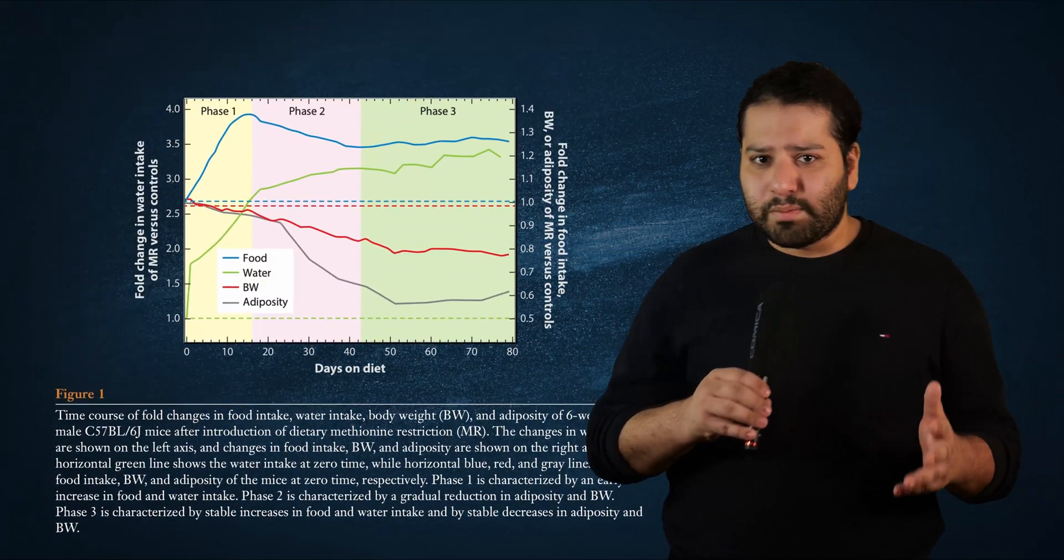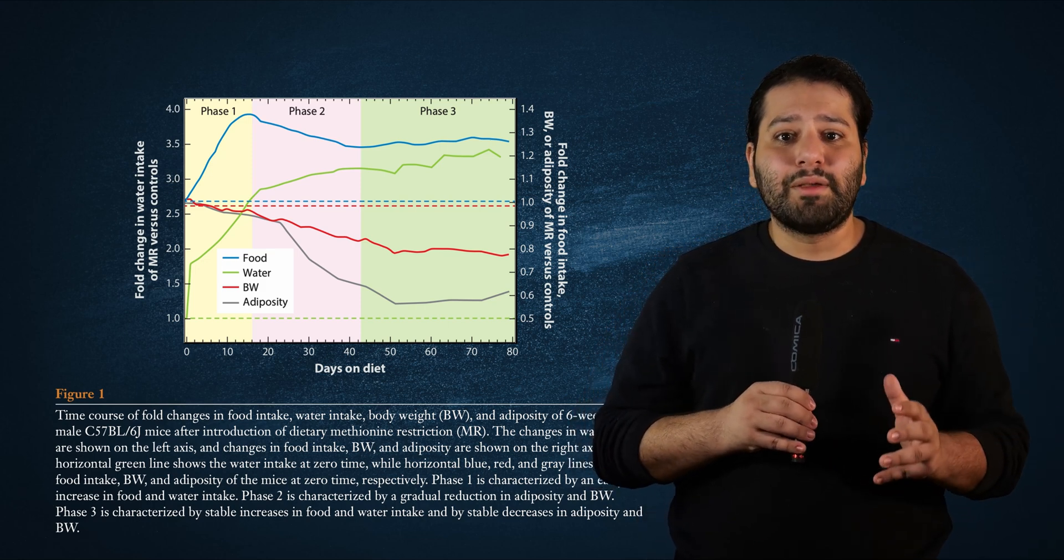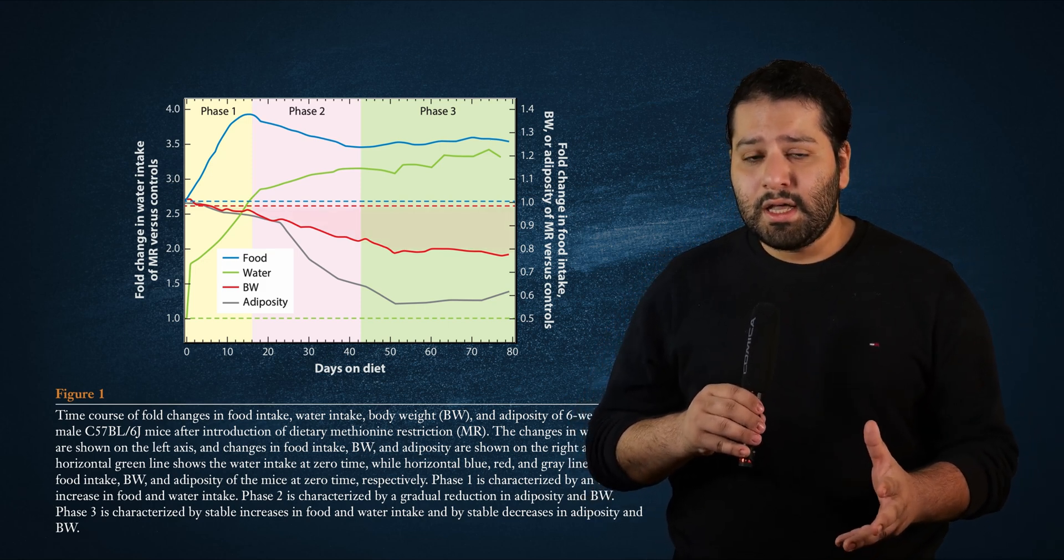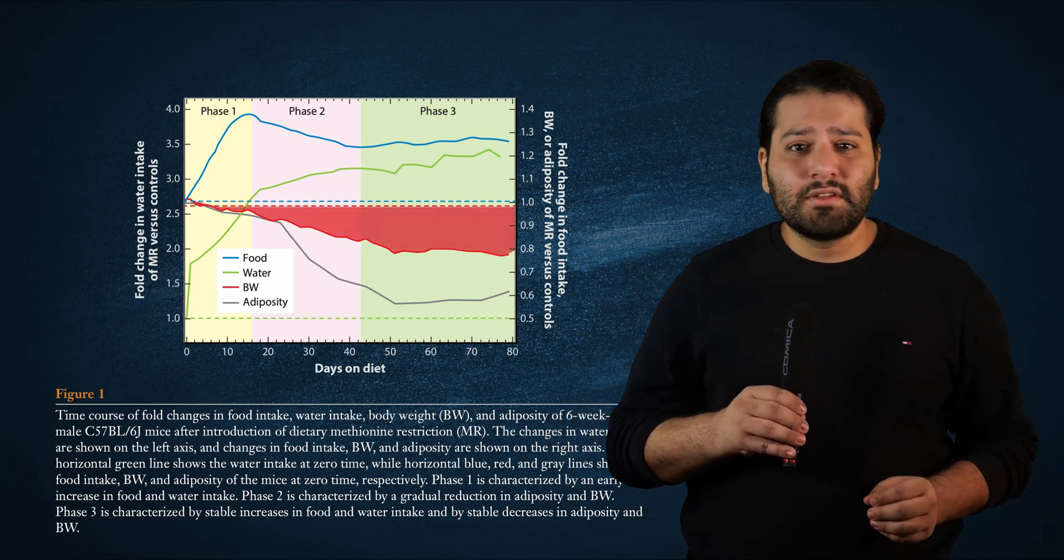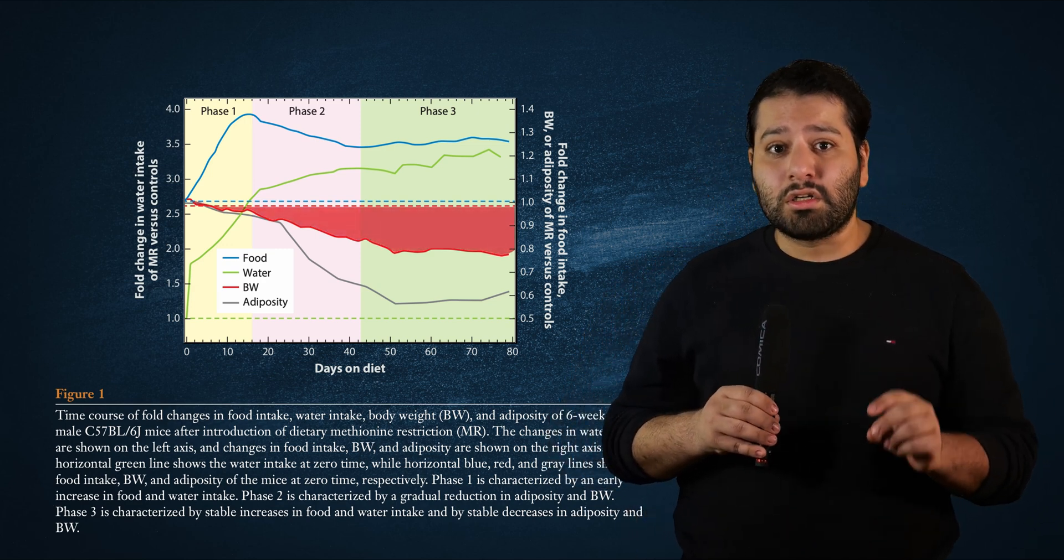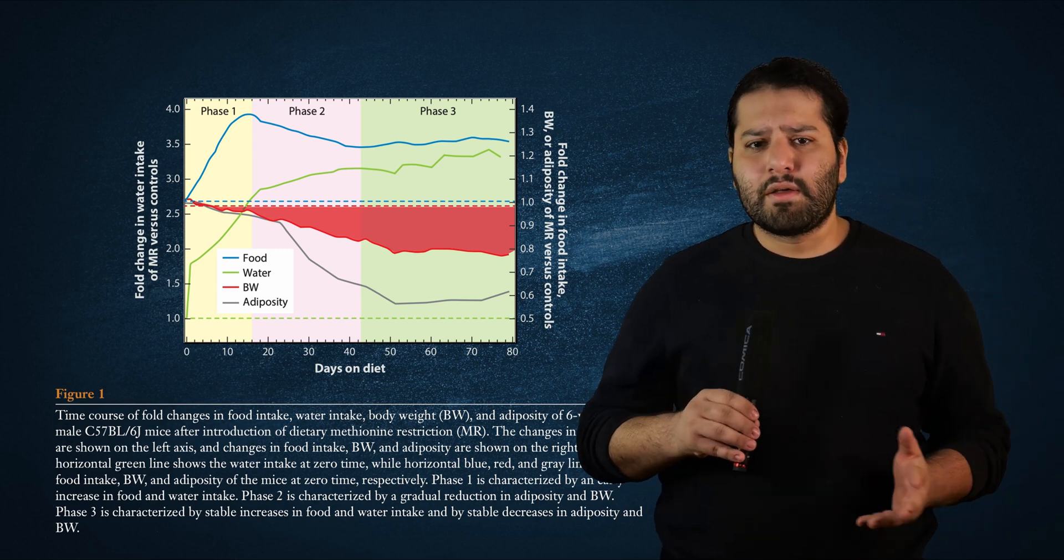This is actually not at all that surprising because we know from other studies that when healthy 6-week baby mice are put on a methionine restricted diet, they end up losing 20% of their body weight and 40% of their body fat in just under 40 days compared to their peers who consume the normal methionine abundant diet.